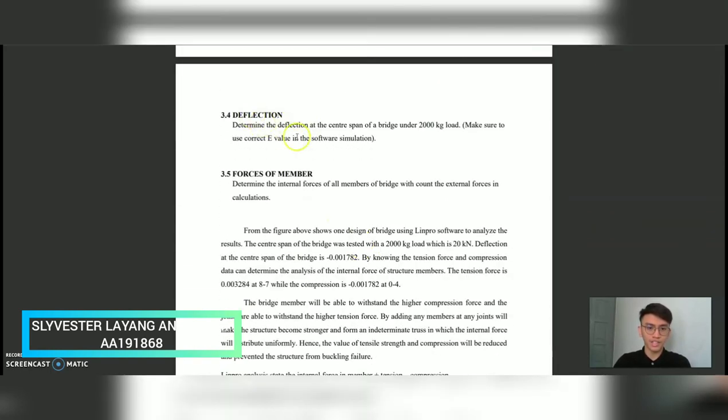And for the deflection at the center span of the bridge is negative 0.001782 and the tension is 0.003284 at member 87, while the compression is negative 0.001782 at member 0 to 4. That's all from me, thank you.